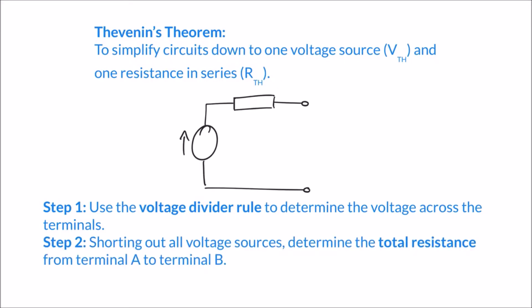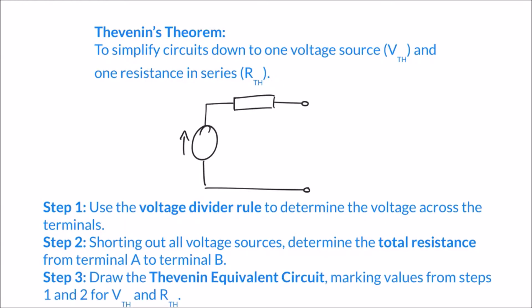Step two is to short out all voltage sources and determine the total resistance from terminal A to terminal B. We'll see just what that means when we look at our first example — we're going to short out all the voltage sources and determine the total resistance from terminal A to terminal B. Step three is to draw the Thevenin equivalent circuit, marking on values from steps one and two for the Thevenin voltage and Thevenin resistance, ending up with just one voltage source and one resistance.